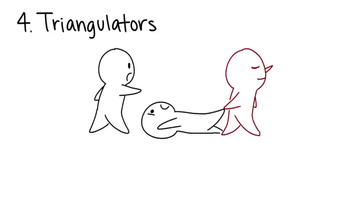Number 4: Triangulators. These people always try to get others on their side. They're quick to say nasty things and put you down. They separate good friends and drive wedges in between families.